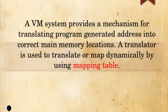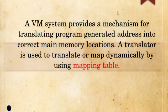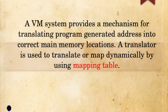The virtual memory system provides a mechanism for translating program-generated addresses into correct main memory locations. A translator is used to translate or map addresses dynamically by using a mapping table. A virtual address is mapped dynamically using the mapping table.